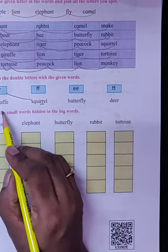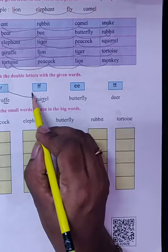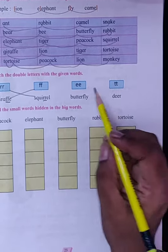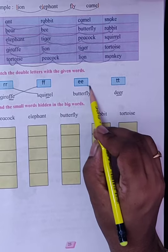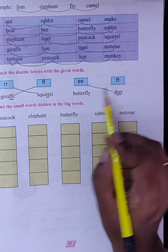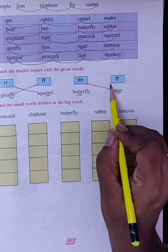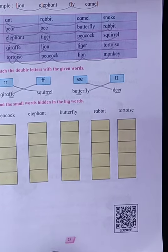Double F, double F is found in Giraffe, so we will match with Giraffe. Double E, double E is found in Deer, so we will match with Deer. And double T is found in Butterfly, so we will match with Butterfly.